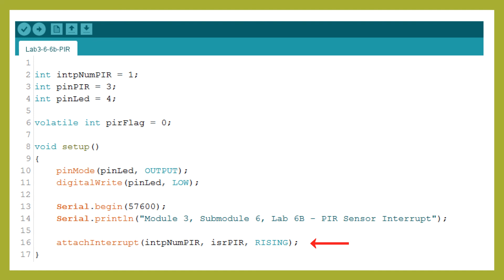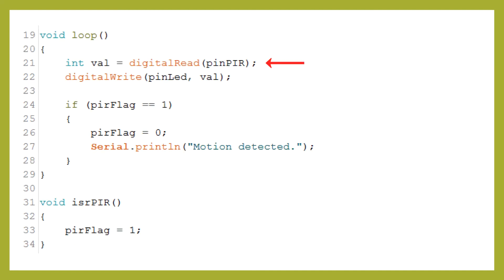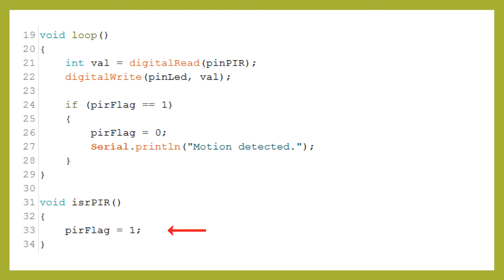We give the attach interrupt function our interrupt number, the ISR function, and we set it to sense on the rising edge — the transition from low to high. In the loop function, we indicate the value of the PIR pin to the LED so we can visually see when it's on or off. To do this, we read the value of the PIR pin and write it to the LED pin. We then check if we received an interrupt; if we did, we clear the interrupt flag and print out a message. In the interrupt service routine, we once again simply set the interrupt flag.